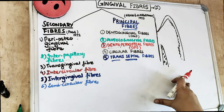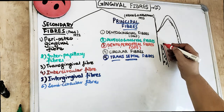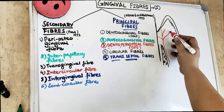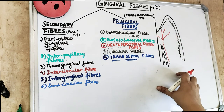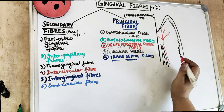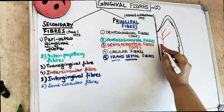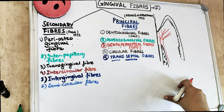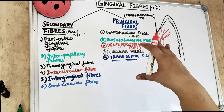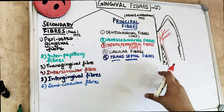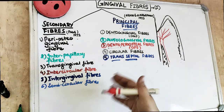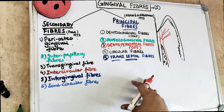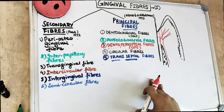Moving to the blood supply of the gingiva: there are supraperiosteal arterioles coming from the alveolar bone along the facial and lingual surfaces. We also have vessels of the periodontal ligament extending into the gingiva and anastomosing in the sulcus area, and arterioles emerging from the crest of the alveolar bone going into the interdental septum. For lymphatic drainage, the lymphatics remove excess fluid, proteins, and microorganisms, bringing lymphatics from the connective tissue papilla.